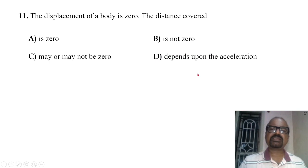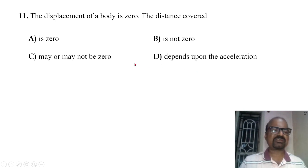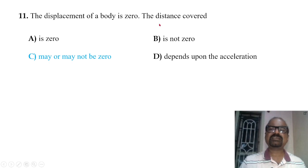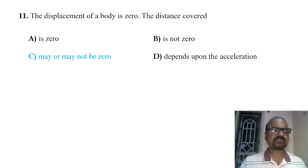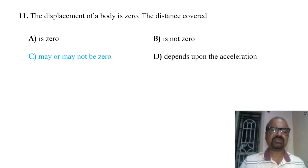The displacement of a body is zero — does that mean the distance covered is also zero? No. If displacement is zero, the distance may or may not be zero. But if distance covered by a particle is zero, then displacement must be zero.